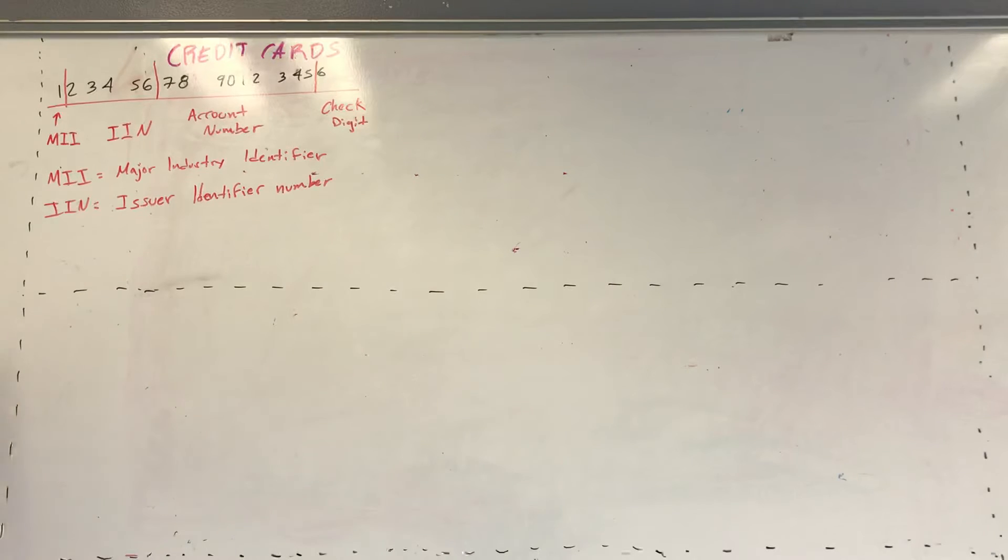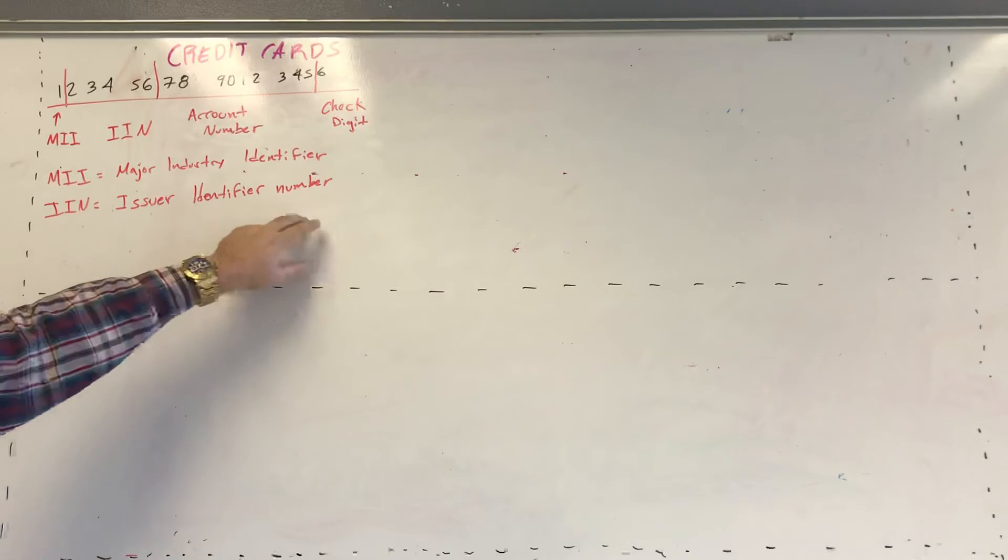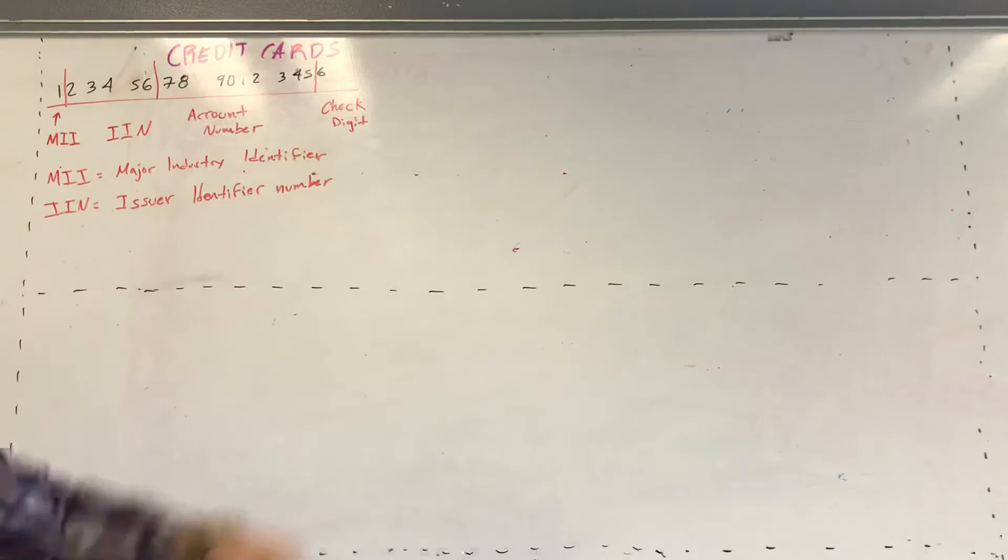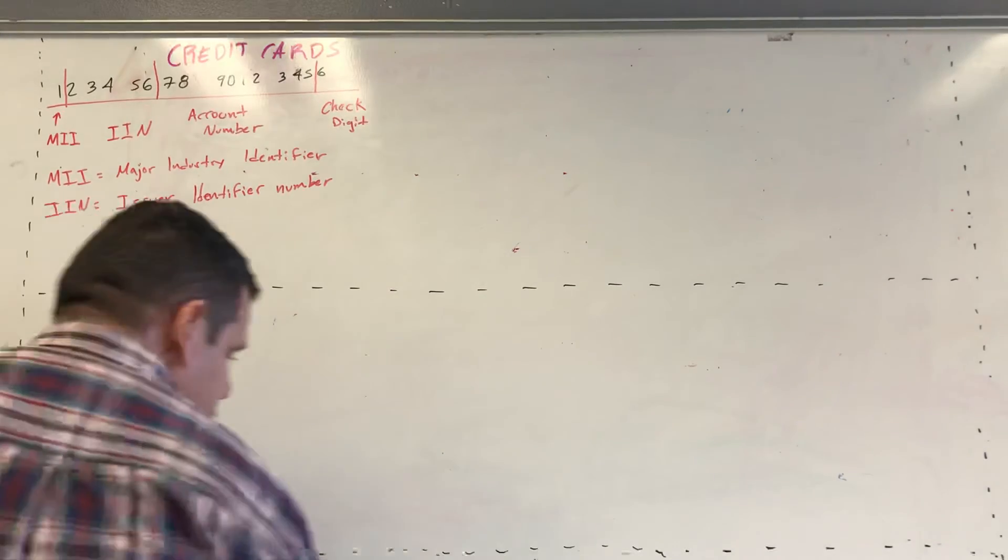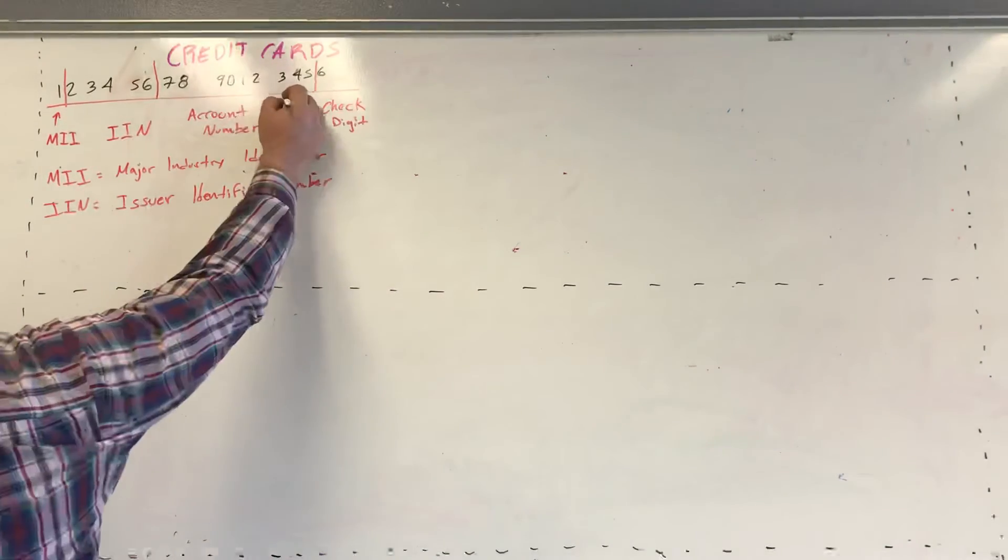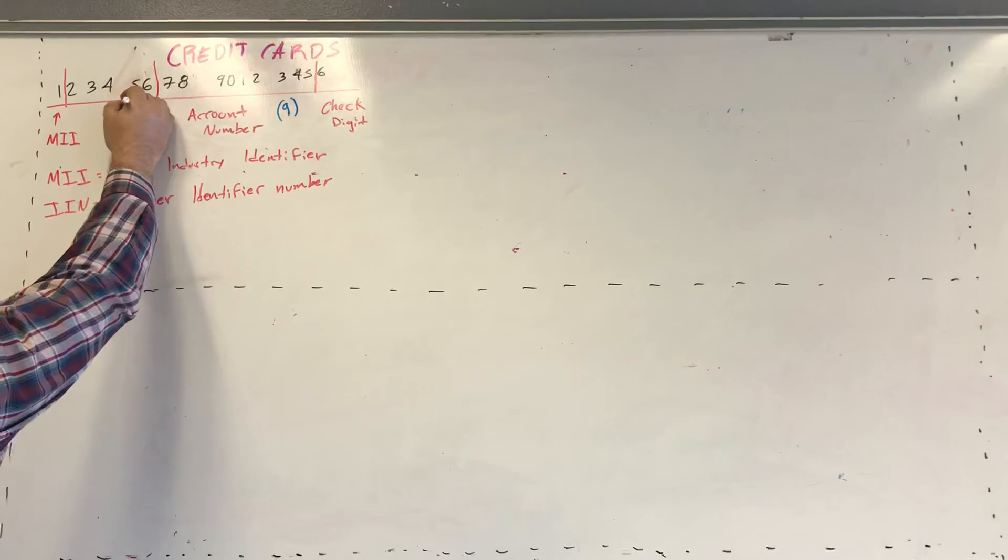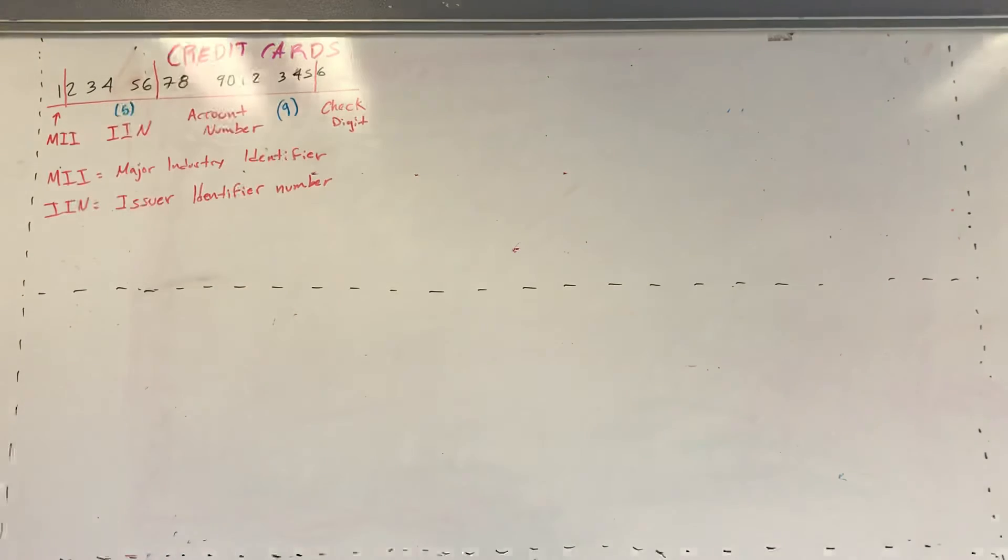So once again you have 16 digits. The first one is just for the Major Industry Identifier. The next 5 are the Issuer Identifier number and then the next 9 is the account number and the last one is the check digit. I will write 9 here because I have 9 numbers there and 5 here because I have 5 numbers there. So this is how it works.